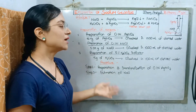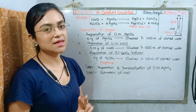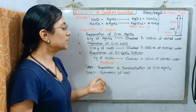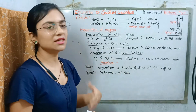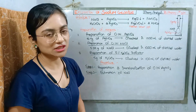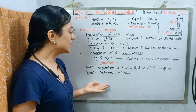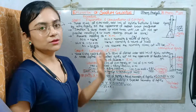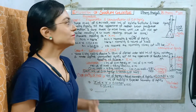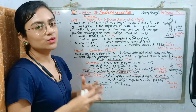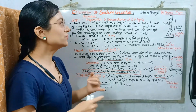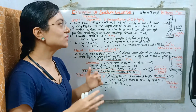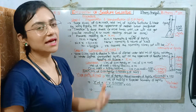In the procedure, we will see two steps. In the first step, we will perform the standardization of AgNO3. In the second step, we will estimate sodium chloride. Let's talk about the procedure for preparation and standardization of 0.1 N silver nitrate.